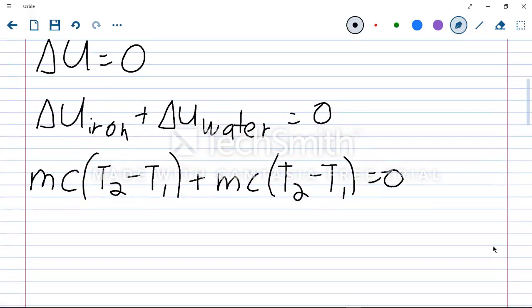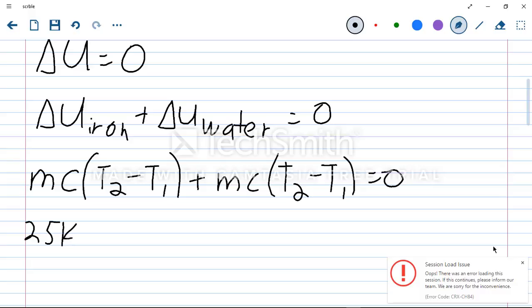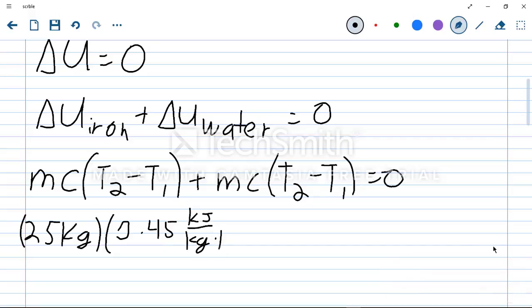Plugging in our numbers here, we have the mass of the iron is 25 kg. The specific heat at room temperature for iron is 0.45 kJ per kg kelvin. Times our unknown final temperature minus our initial temperature, which was 350 degrees Celsius for the iron block.